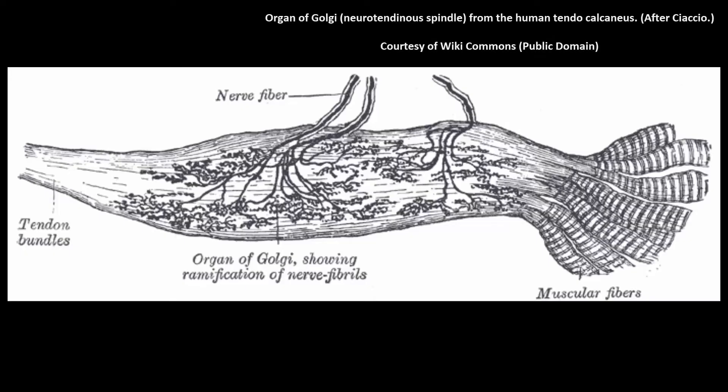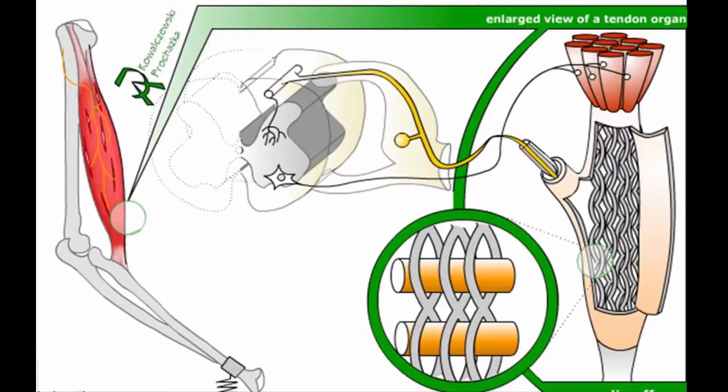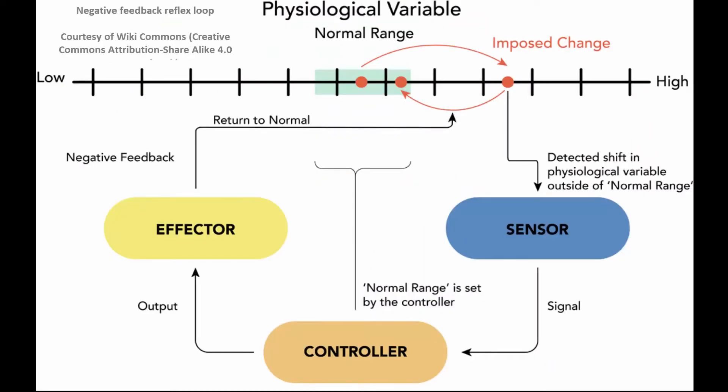Another type of proprioceptor with a similar function are Golgi tendon organs. These detect muscle tension during contraction and activate IB sensory afferent neurons. These in turn activate inhibitory interneurons, which prevent the action of the alpha motor neurons of the same muscle. This is an example of a negative feedback circuit, which prevents muscle and tendon damage when large forces are generated.